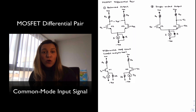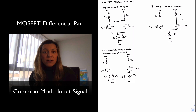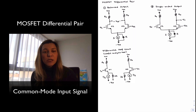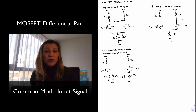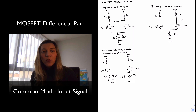We already know why differential amplifiers are important, especially in the design of integrated circuits. For one thing, they eliminate common mode noise because the signals are taken differentially, so any noise that is present in both inputs and both outputs gets eliminated because we are taking the differential signals — we are only measuring the difference between the signals. So any common mode noise will get cancelled.